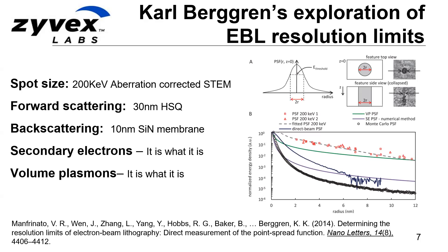Carl Berdren's group at MIT did a beautiful paper exploring the limits of e-beam lithography. To minimize these effects, they achieved a very small spot size using high energy and aberration-corrected lenses in a scanning transmission electron microscope, and used a thin layer of HSQ — a negative resist. They almost eliminated back scattering by using a very thin 10-nanometer silicon nitride layer. But there wasn't much they could do about the range of secondary electrons or volume plasmons. Their experimental work agreed well with theory, showing that you had to go out to almost a 4-nanometer radius before you're down to about 10% of the deposited energy in the resist, with a slowly diminishing tail extending quite a few nanometers further.